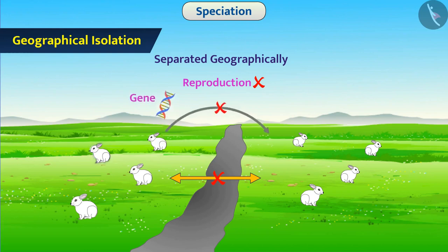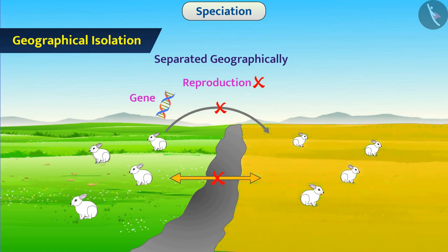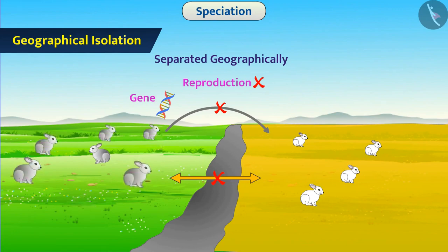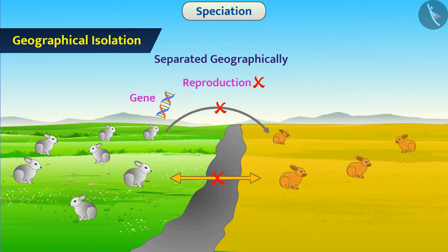If the geographical conditions are different, then the natural selection and evolution in two populations takes place differently. They become different from each other over generations. Many times, this results in development of two different species.